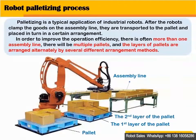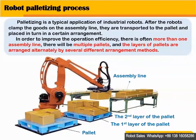Palletizing is a typical application of industrial robots. After the robots clamp the goods on the assembling line, they are transported to the pallet and placed in turn in a certain arrangement.